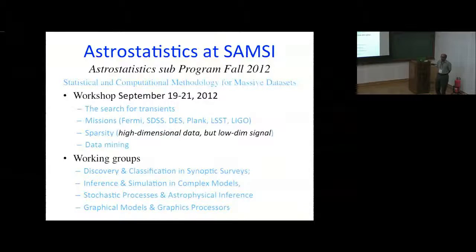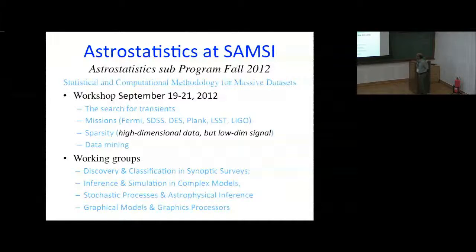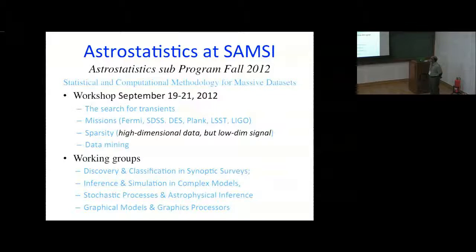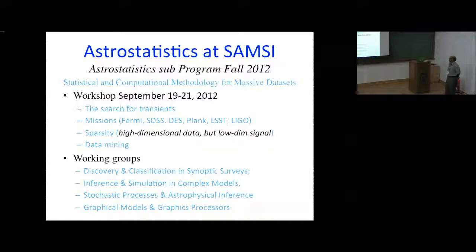Again in 2012, we had a mini-program in astro-statistics as part of a larger program in computational methodology for massive data sets. It started with a workshop in September 2012, with presentations on searching for transients and missions like Fermi, SDSS, and Planck, covering topics like sparsity and data mining. The working groups mainly focused on discovery and classification in synoptic surveys, inference and simulations, stochastic processes, and graphical models.